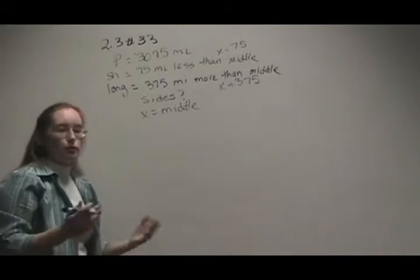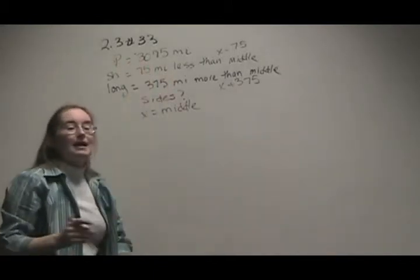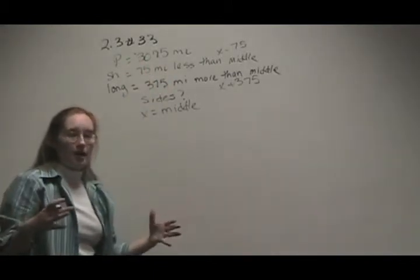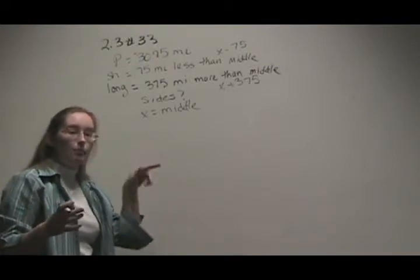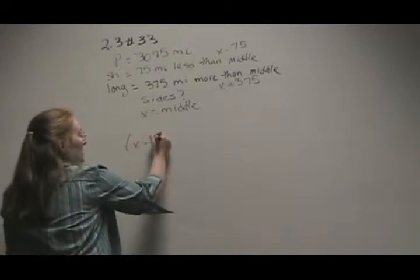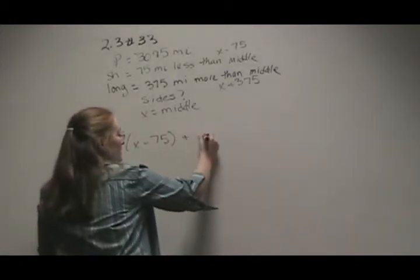So now what's the perimeter? We're given the total, the perimeter. The perimeter is the distance around all the sides, so if you walk the Bermuda Triangle, we're just going to add up all three sides. So x minus 75 plus x,